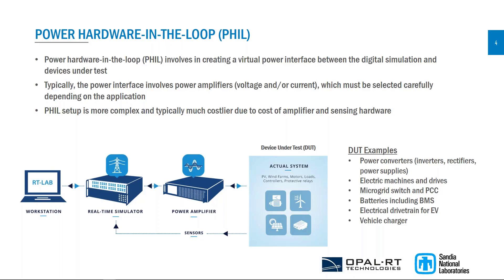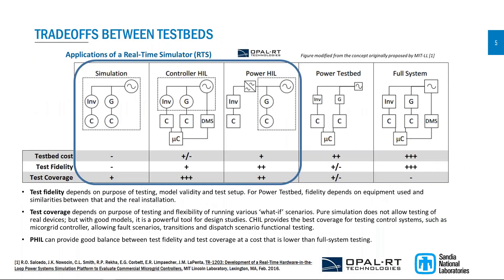A PHIL setup is much more complex and typically more costly than a regular HIL setup, mainly due to the cost of the amplifier and the sensing hardware needed to close the loop. There are different types of testbeds, as depicted in a paper by MIT Lincoln Lab: pure simulation, controller hardware-in-the-loop, power hardware-in-the-loop, a power testbed which is a smaller-scale replication of the full system, and the actual fielded system. Each has positives and negatives in terms of cost, test fidelity, and test coverage.